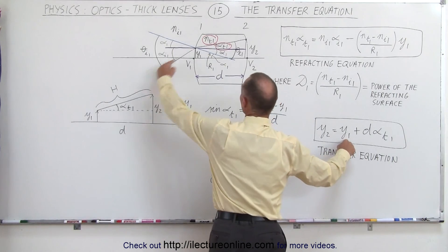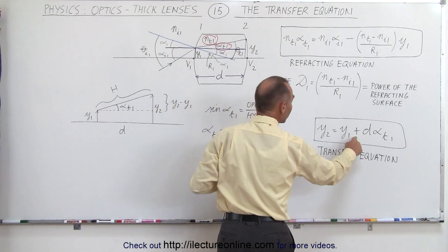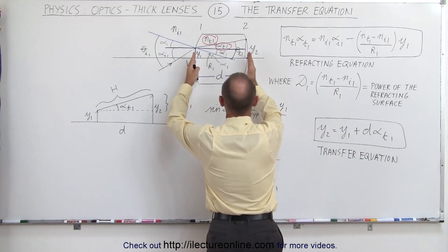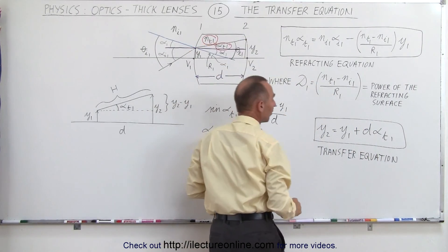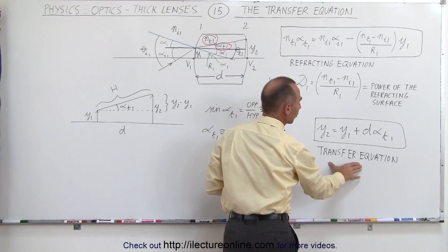in terms of the height where it enters the lens y1 plus the thickness of the lens, the distance from one point to the other, times the angle at which it's going to travel through the lens. And this is then known as the transfer equation.